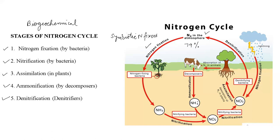A symbiotic nitrogen fixer is a bacterium that has a mutual relationship with the plant, meaning it takes something from the plant in return for what it gives. These symbiotic nitrogen fixers convert atmospheric nitrogen into a usable form, making it accessible for the plant body. In return, they receive organic acids from the plant, which aid their survival. A very important example of a symbiotic nitrogen fixer is Rhizobium, which is present in close association with the root nodules of leguminous plants, helping fix atmospheric nitrogen into accessible usable forms.